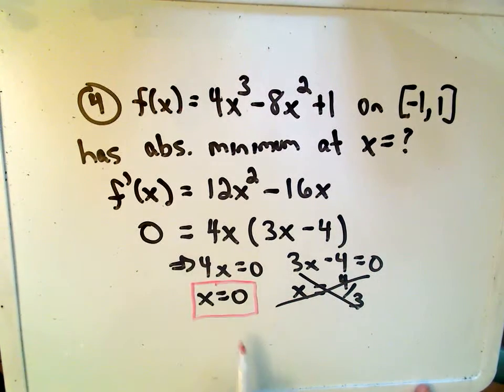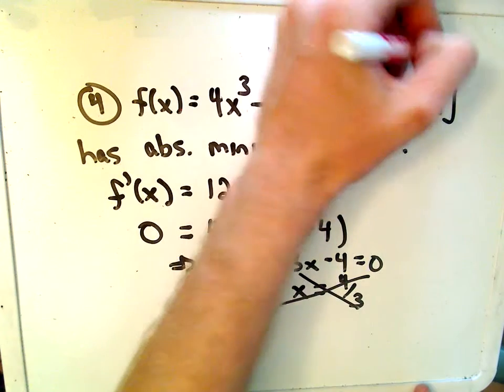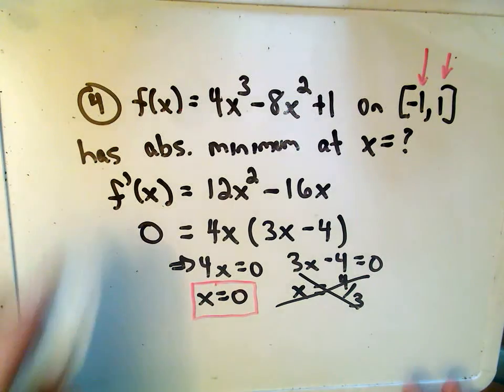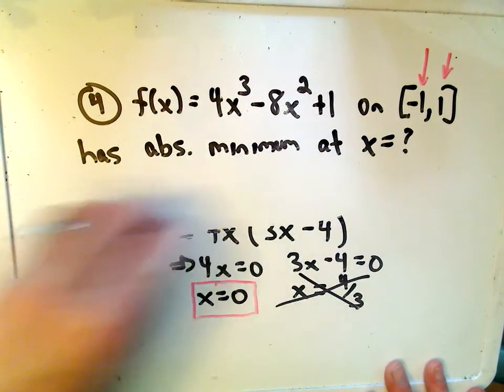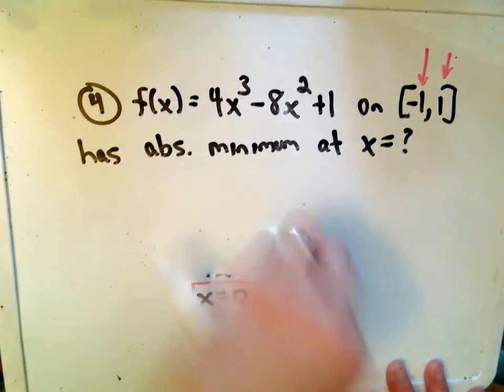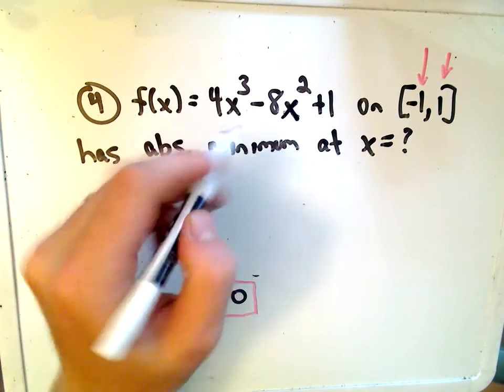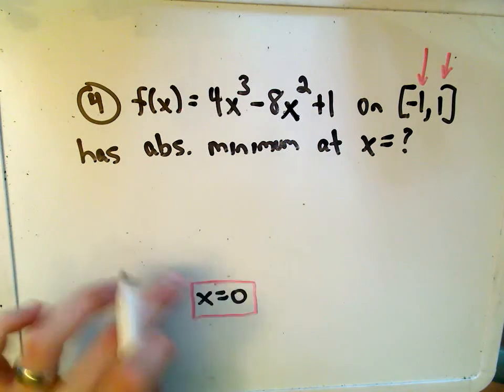So now I just have to evaluate the function at this one critical point along with the endpoints, and again, the biggest values would be the absolute max. The smallest value is going to be the absolute minimum. And again, this only works, I think that's why I was thinking about continuous. You can only use this closed interval method if your function is continuous over the closed interval, which it is.